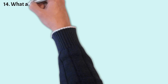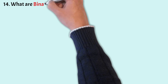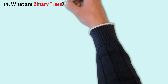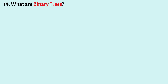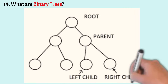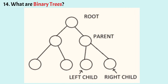What are binary trees? Binary trees are trees where each node has at most 2 child nodes. The child node on the left is called the left child, and the child node on the right is called the right child.